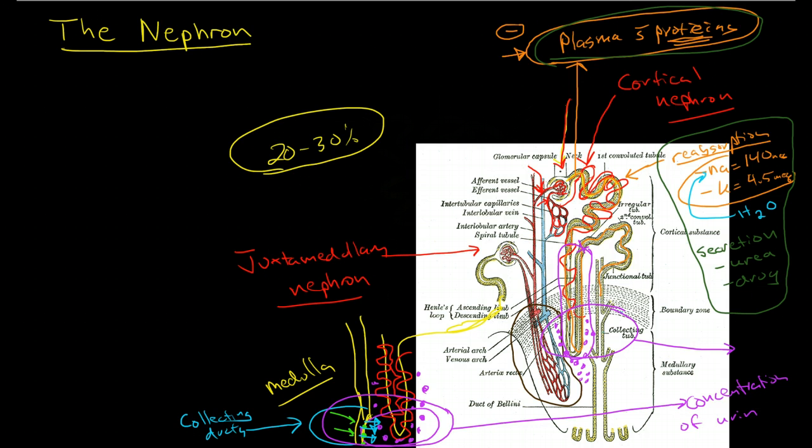So we have three major processes happening in the nephron at three different places. First, we have filtration in the glomerulus, number one.